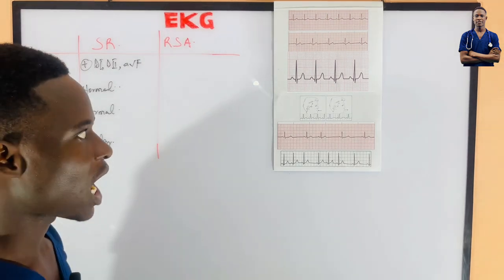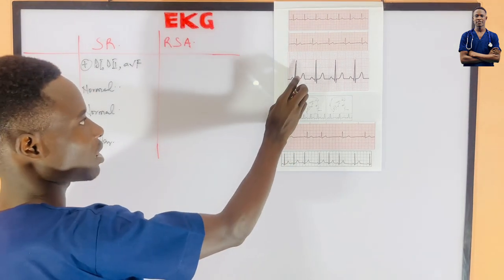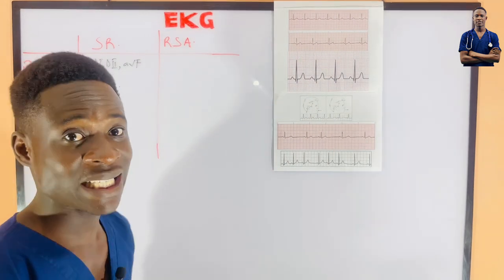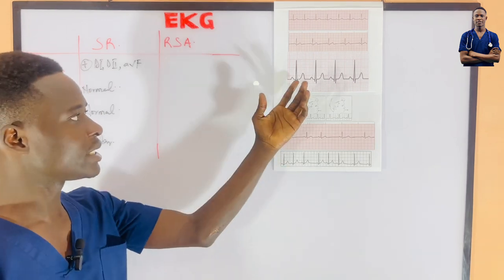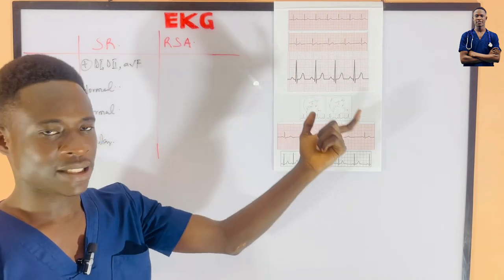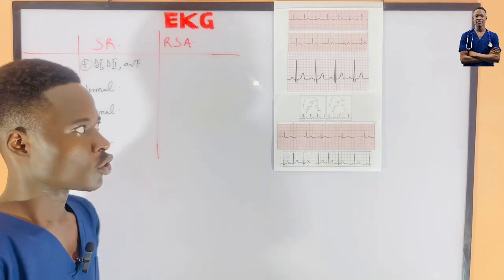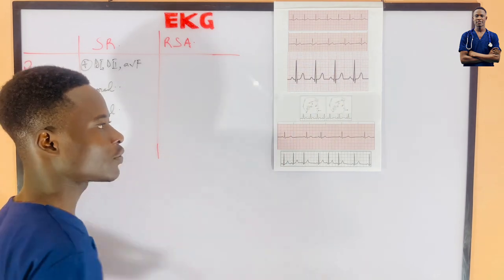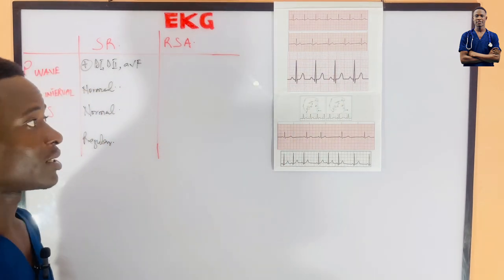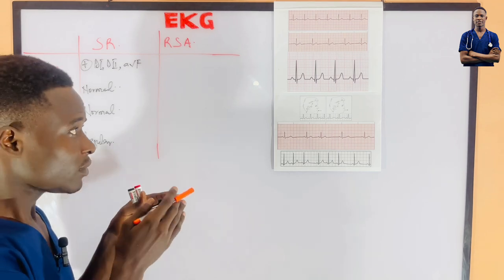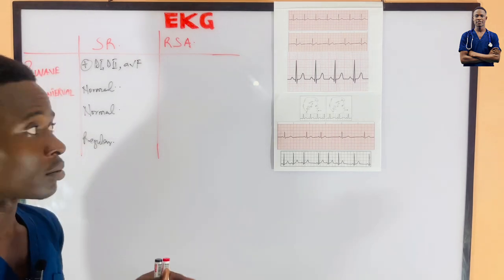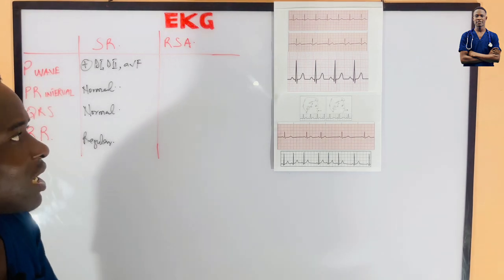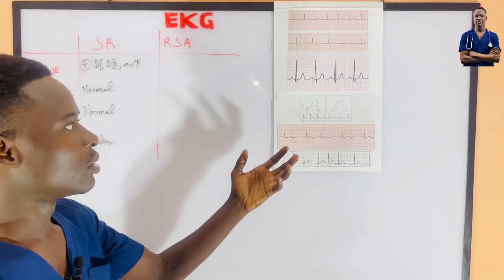Lastly, the regularity of the RR intervals: the distance between one R wave and the next must be equal — equidistant between the QRS complexes. The distance between this one and that one must equal the distance between that one and the next. With that we confirm there is regularity in the RR intervals.